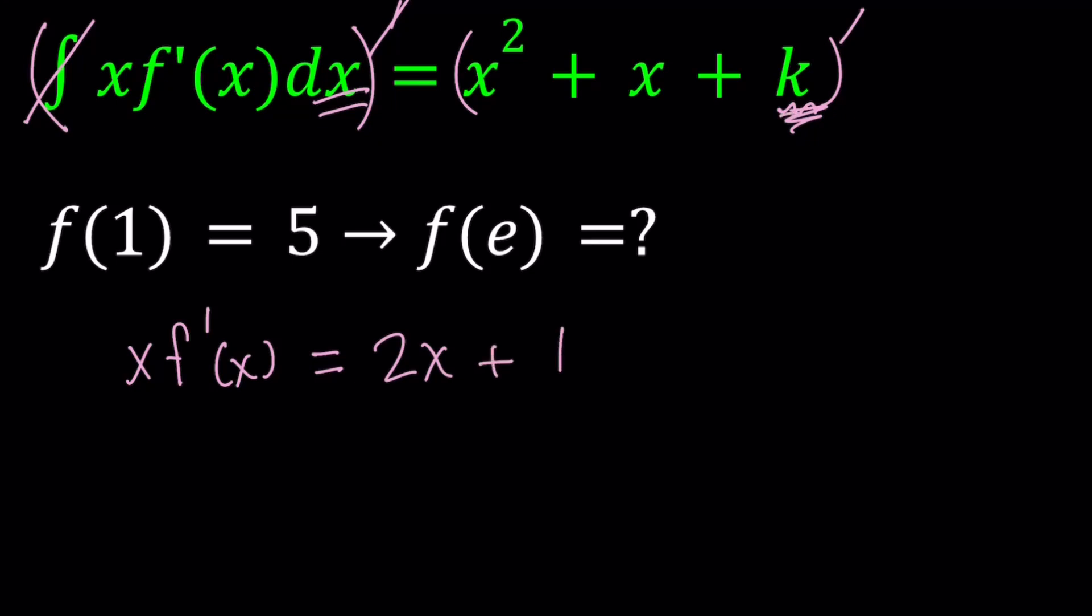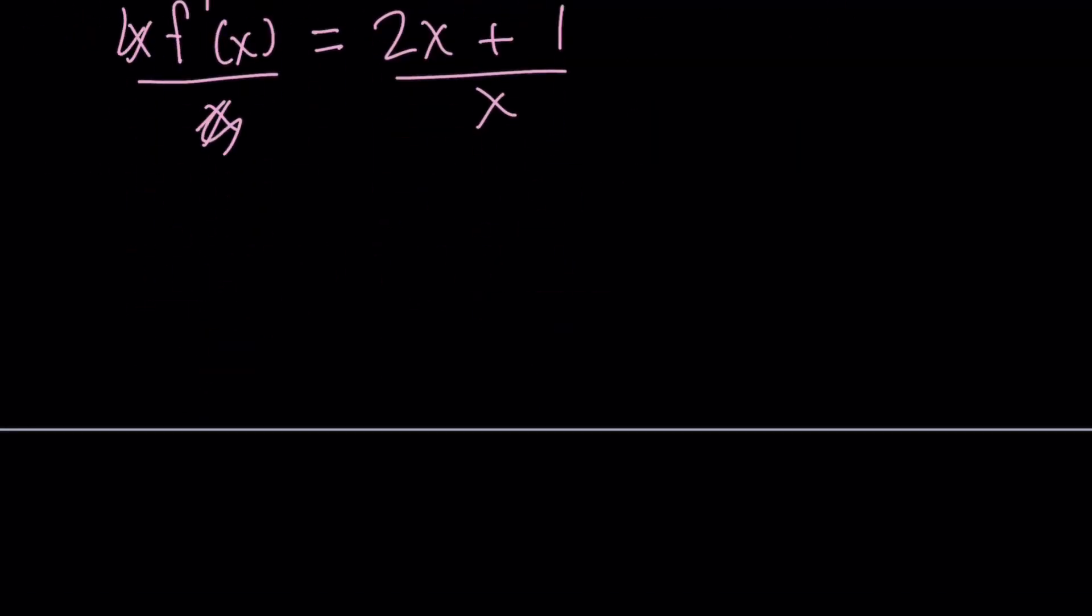Now we are trying to find f of x. So let's divide both sides by x to find f prime. So from here, x cancels out. And we end up with f prime of x equals 2 plus 1 over x. So this is the derivative f prime.